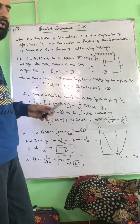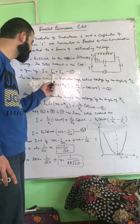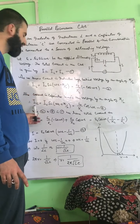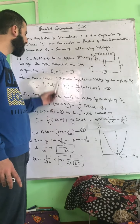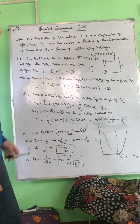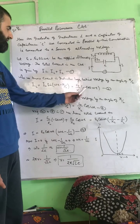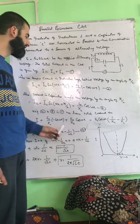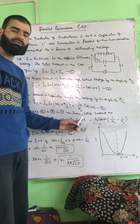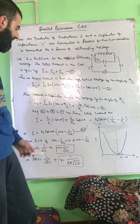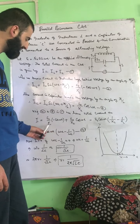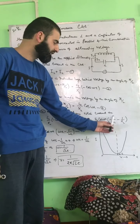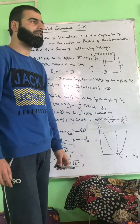The total current is the sum of IL and IC. Adding the two expressions: I = −(E₀/XL) cos(ωt) + (E₀/XC) cos(ωt). Taking E₀ cos(ωt) as common, we get I = E₀ cos(ωt) × (1/XC − 1/XL).